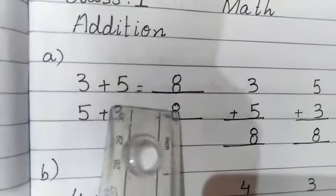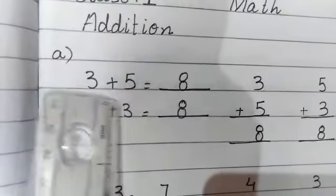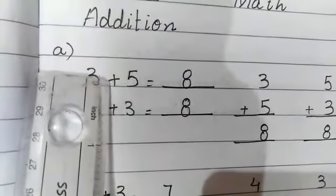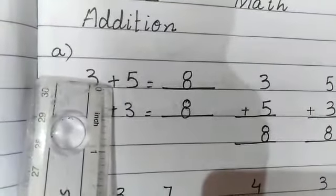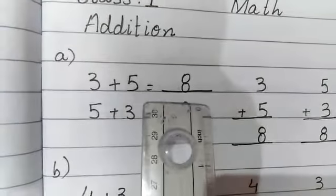3 plus 5. Answer is 8. 3 in your mind and 5 fingers out. What is in our mind? 3, 4, 5, 6, 7, 8. Answer is 8.